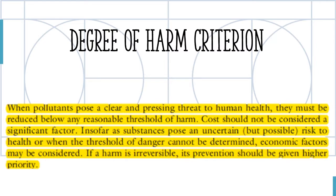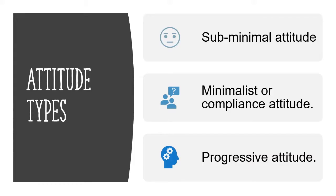When it comes to the environment, the degree of harm assessment must not take financial costs in high regard, but instead the safety of humans and ecosystems. The more dangerous and irreversible a harm is, the more focused we should be at preventing it. When looking at how organizations and engineers behave with regard to the environment, we can identify three types of attitudes: a sub-minimal attitude, a minimalist attitude, and the progressive attitude.